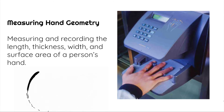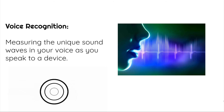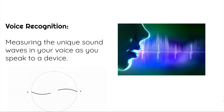Hand geometry is another aspect of biometric authentication. With hand geometry, they measure and record the length, thickness, and widths and surface area of a person's hand, which is unique to each person, and this can confirm your identity. A person's voice and speech patterns can also be a physical characteristic that computers can recognize to help confirm your identity. When you speak into a voice recorder, you create sound waves, and these sound waves are unique to each individual.